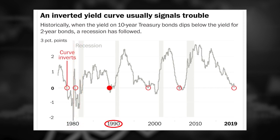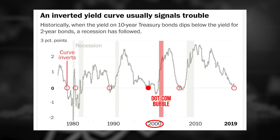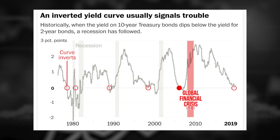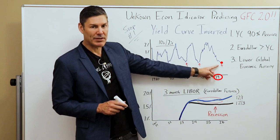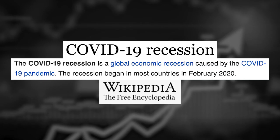Then 1990 — what followed? A recession. Then 2000, the dot-com bust. Then GFC 1.0 in 2007. Of course, we had 2019 August — and what happened in March of 2020? But I want to be very clear: what we're referencing in this chart is the treasury yield curve.